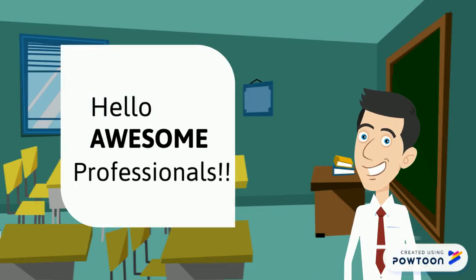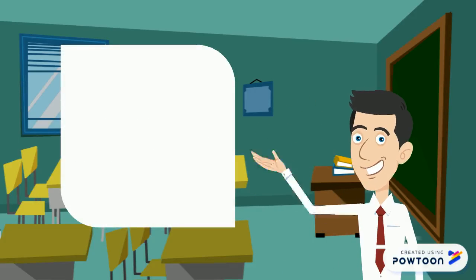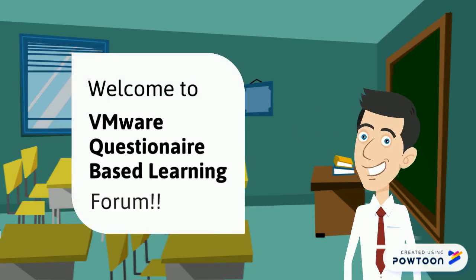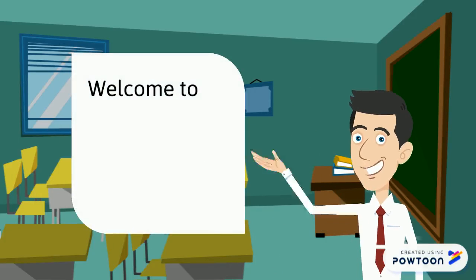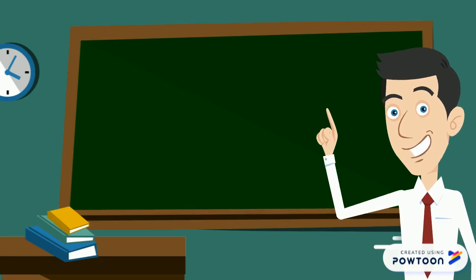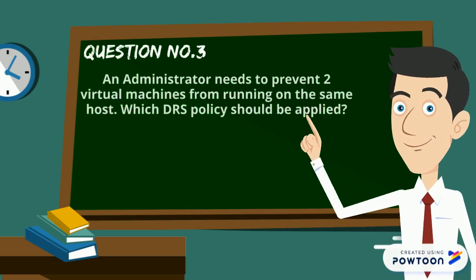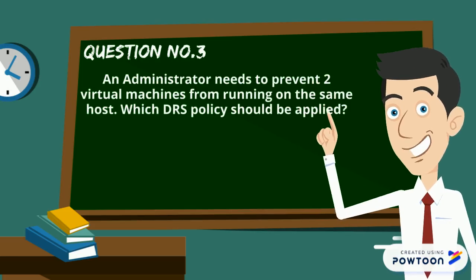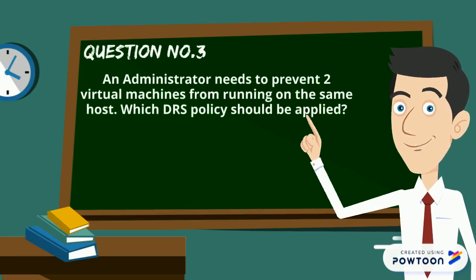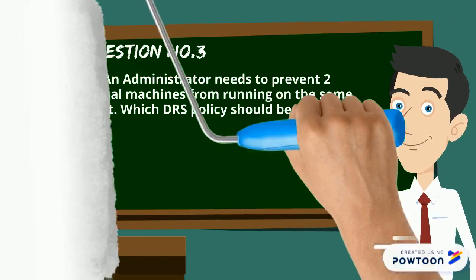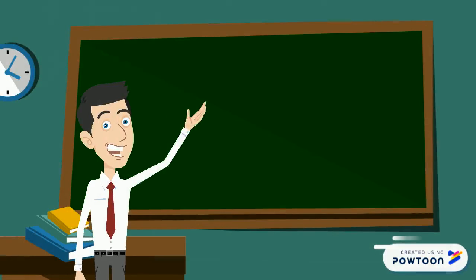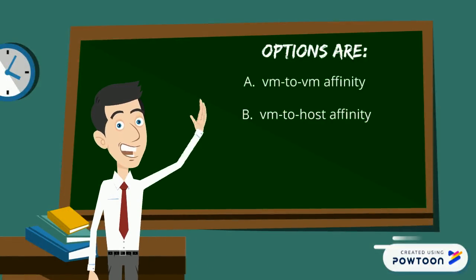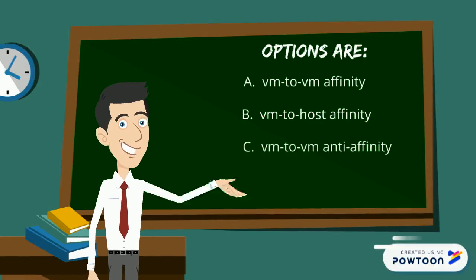Hello, awesome professionals! Welcome to VMware Question-based Learning Forum. Here is our question number three: an administrator needs to prevent two virtual machines from running on the same host. Which DRS policy should be applied? The options are VM to VM affinity, VM to host affinity, VM to VM anti-affinity, and VM to host anti-affinity.